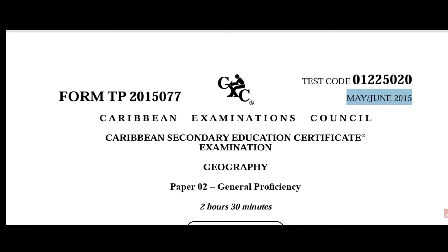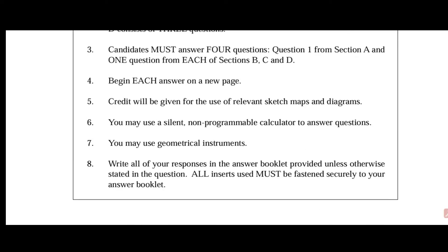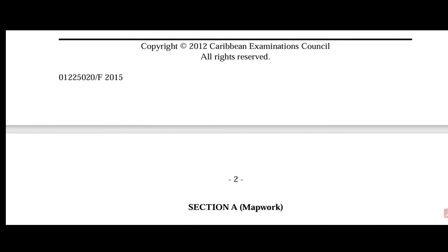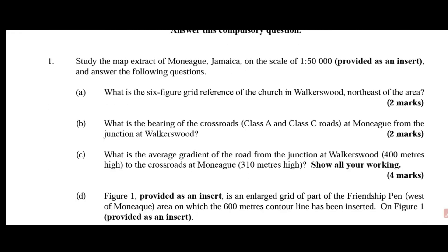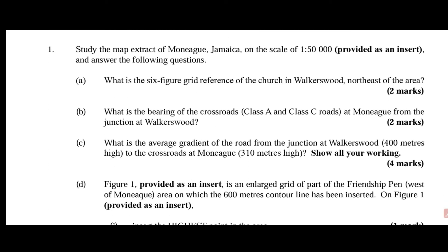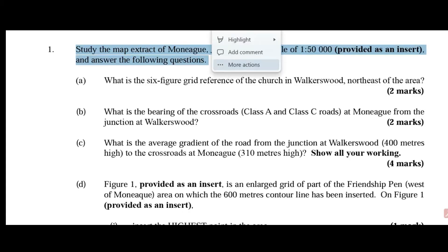Alright folks, let us begin with respect to the 2015 paper, Geography Paper 2, Map Reading, Question 1, General Proficiency. This is in fact a map of Jamaica, Monique, with a scale of 1 to 50,000.